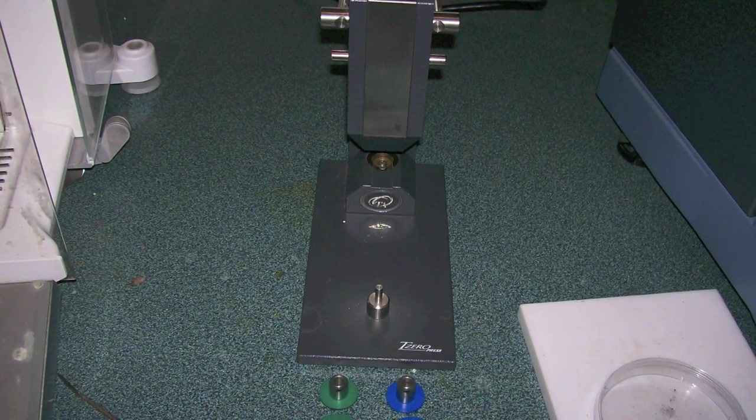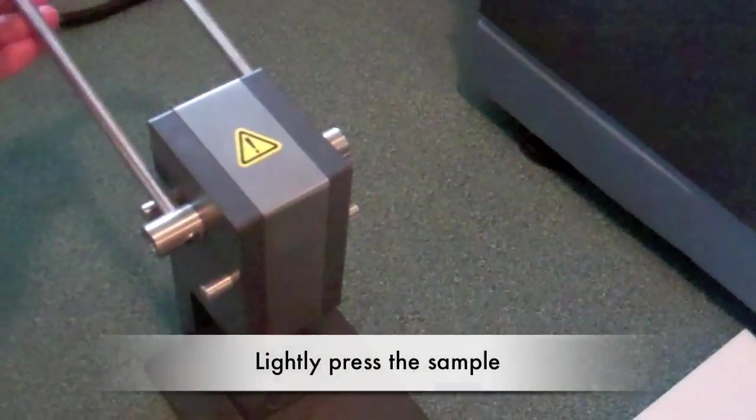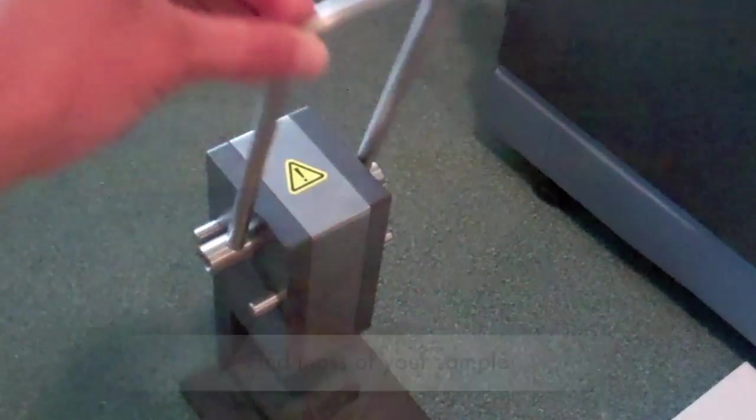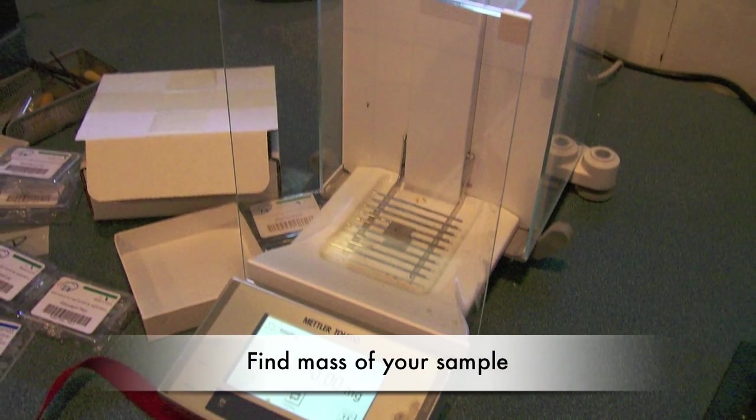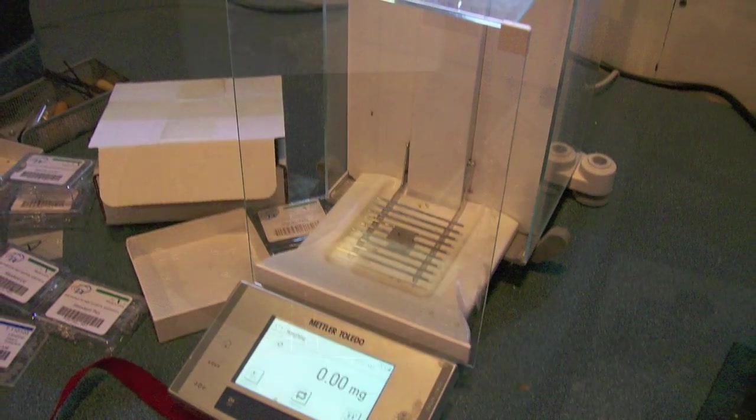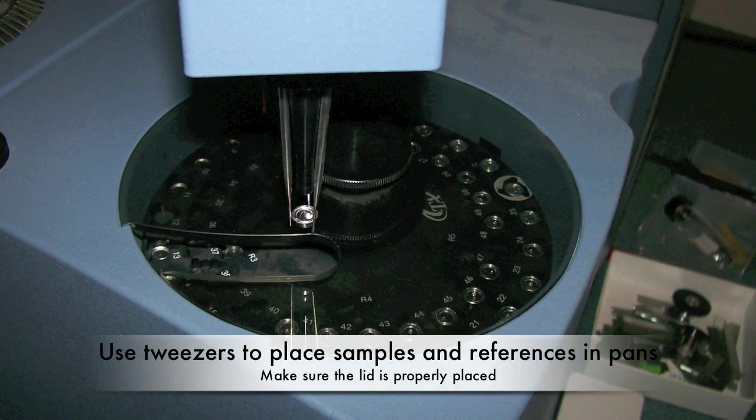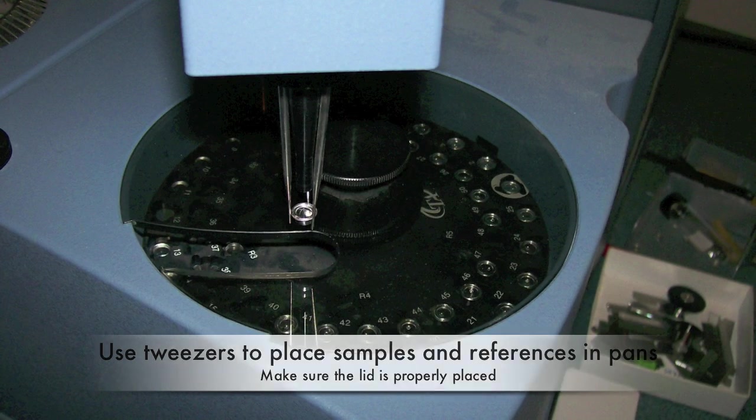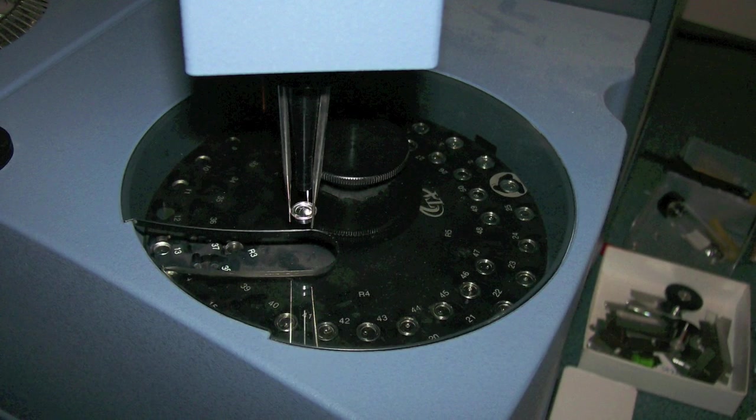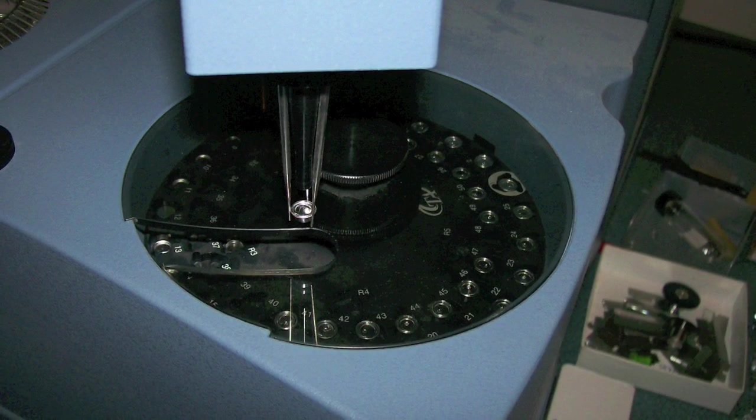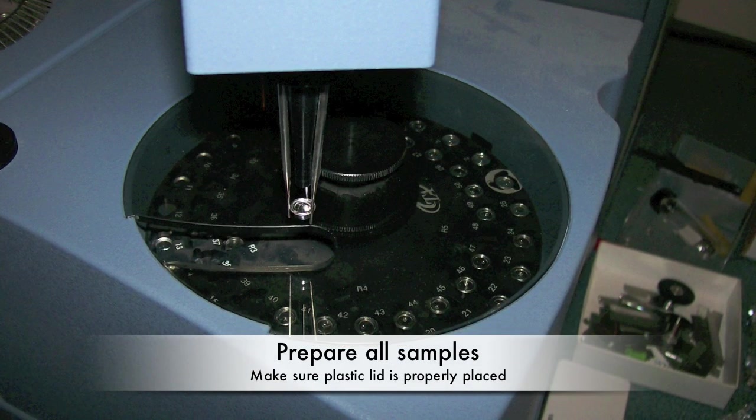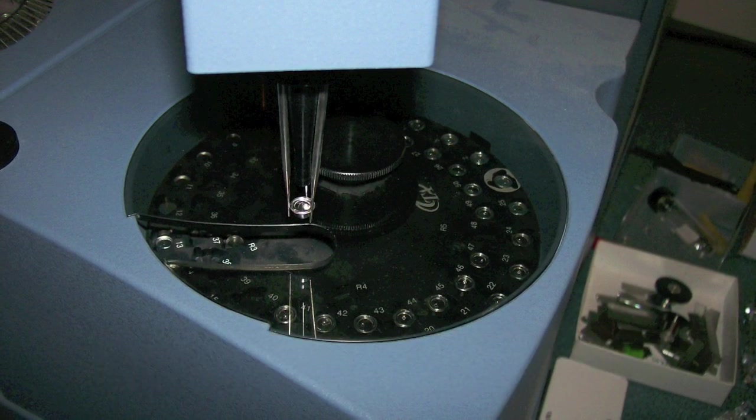Use the blue holders for hermetic pans and the green for standard pans. Use the press kit to lightly seal the sample. Weigh the sample pan and record your sample mass in the software. Use tweezers to place the sample pan in an empty position in the auto-sampler. Identify the pan number. Also press the empty reference pan and place it in the proper reference pan position. Do the sample preparation and placement for all samples. Make sure the large plastic lid is properly placed over the sample holders.